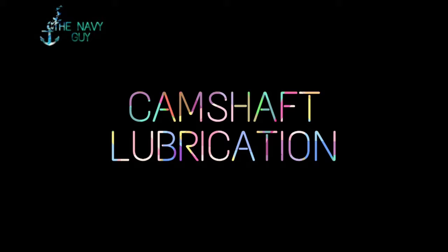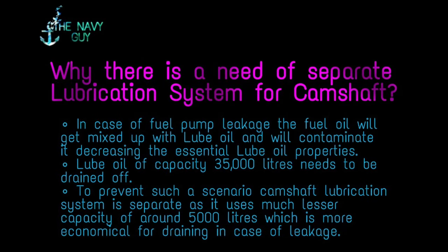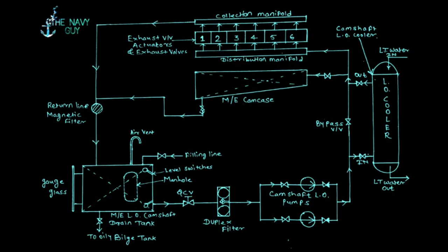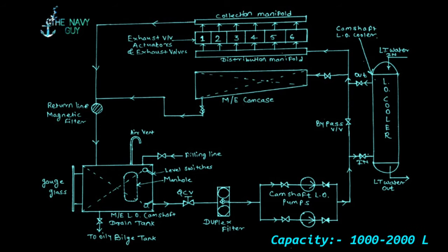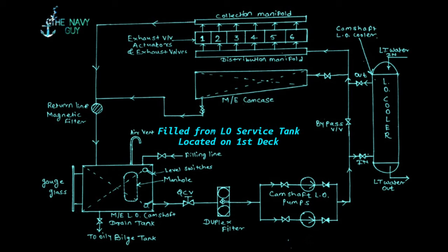Now we will talk about the camshaft lubrication system. A favorite interview question is: why is a separate lubrication system needed for the camshaft? The answer is that in case of fuel pump leakage, fuel oil would contaminate the main lube oil of 35,000 liters capacity, which would need to be drained. A separate camshaft lubrication system of only around 5,000 liters is more economical in case of such leakage. The system starts from the main engine camshaft lube oil drain tank on the fourth deck, with a capacity of 1,000–2,000 liters. It has a filling connection from the main engine lube oil service tank on the first deck, and is mounted with a gauge glass, air vent, drain valve, manhole door, two level sensors with alarms, and a temperature sensor.